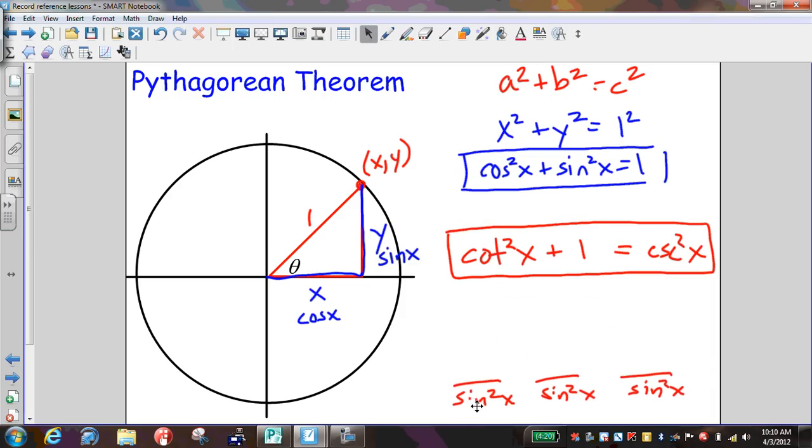Now I'm going to take that out of there and I'm now going to do it again, but divide everything by cosine squared. Cosine squared here and cosine squared over here.